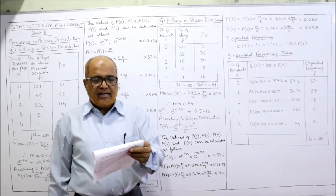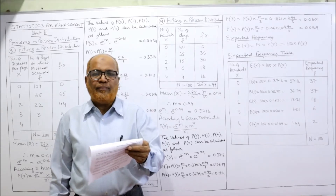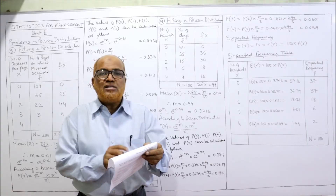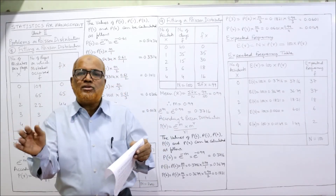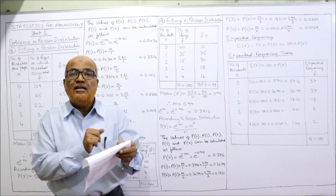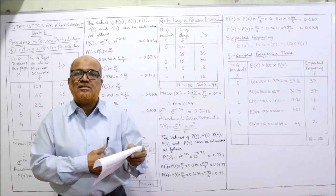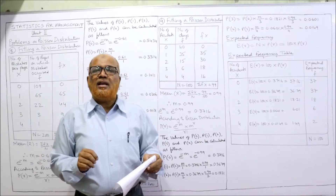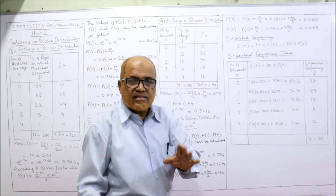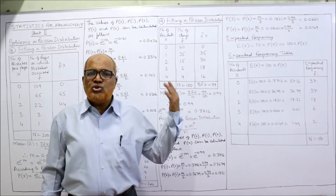Problem nine: the following table gives the number of days in a 100-day period during which automobile accidents occurred in a city. Out of 100 days: 40 days had zero accidents, 35 days had one accident each, 15 days had two accidents each, 6 days had three accidents each, and 4 days had four accidents each. These are the actual frequencies. We need to fit a Poisson distribution and find the expected frequencies.